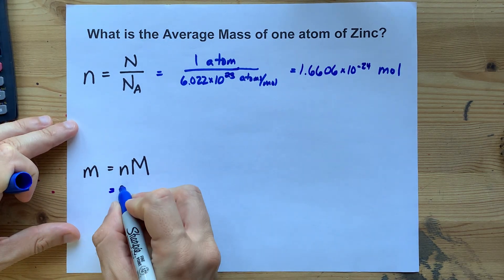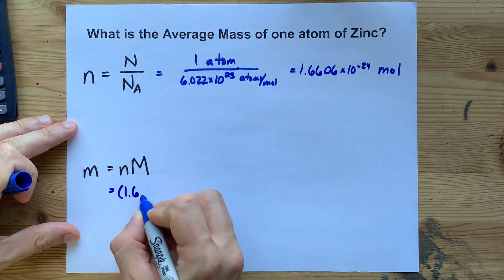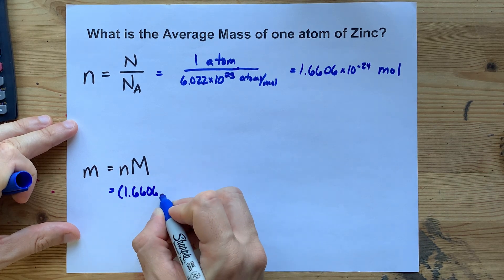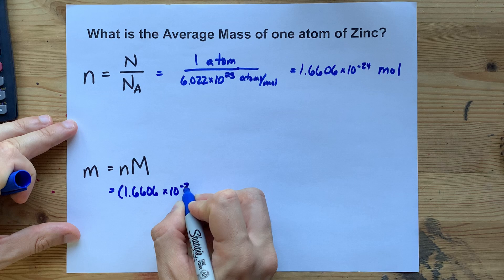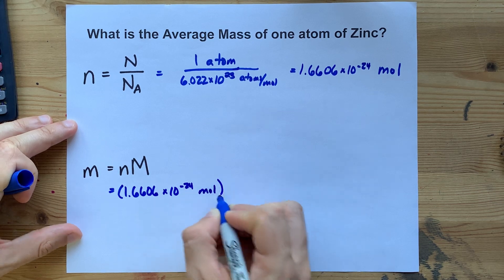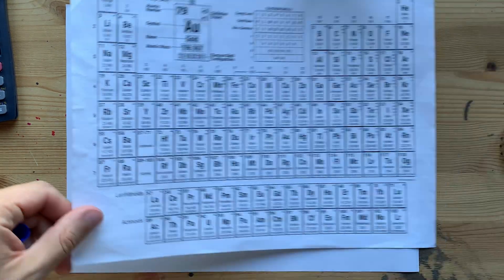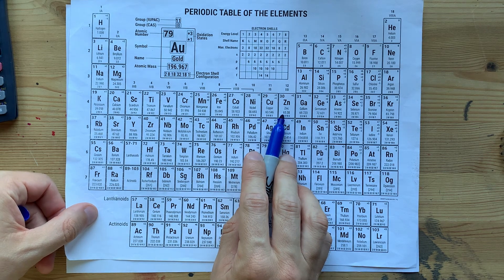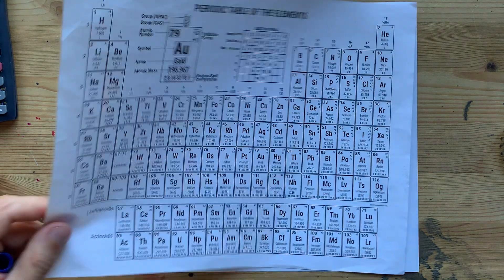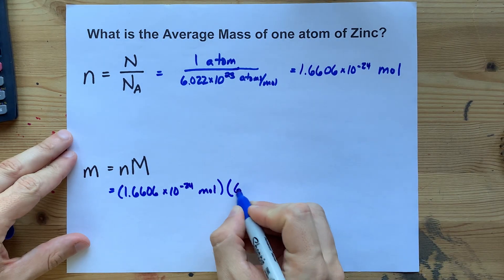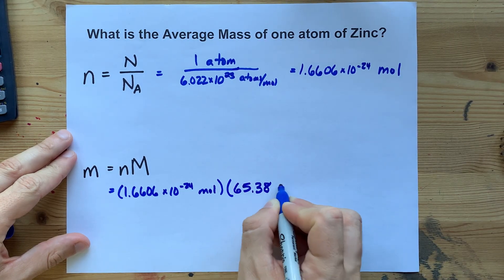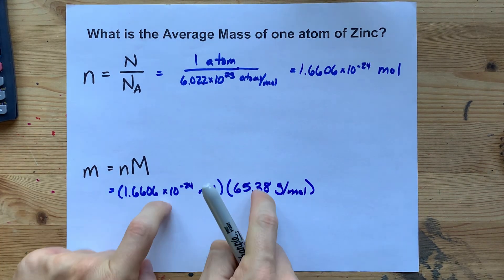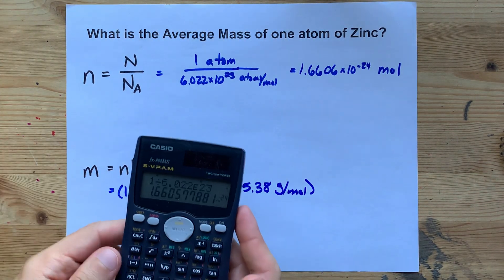But you do know how many grams per mole zinc weighs. 1.6606 times 10 to the negative 24 moles of zinc. Using the periodic table, this is the average mass in grams of a whole mole: 65.38 grams for every mole that you have. So if you have the number of moles, you can just multiply those two numbers.